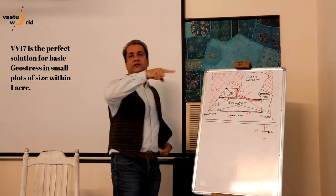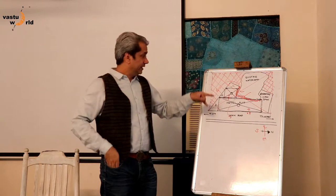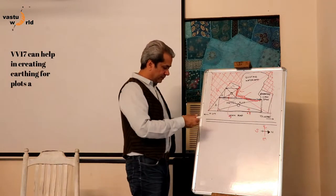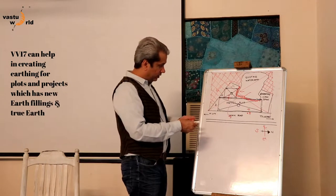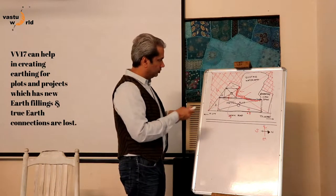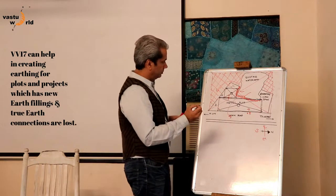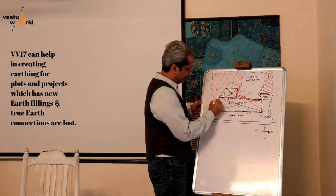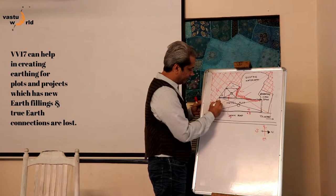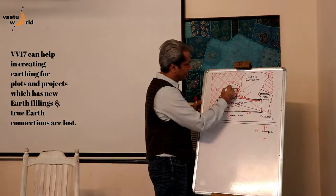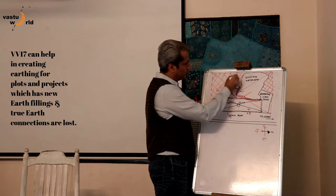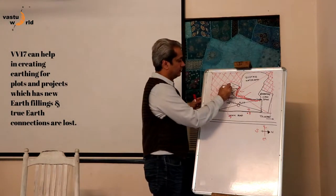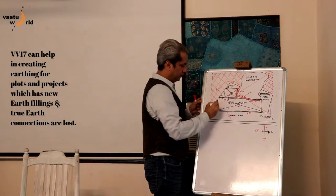Sometimes we use these VV17 in northeast and southwest also. In this case, you can use these two areas. So I think I will use one in this side and one is somewhere here outside. Two to take care of this southwest negativity. Two VV17, one and one.